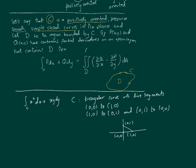This example is integrate x^4 dx plus xy dy over C, where C is the triangular curve with line segments from (0,0) to (1,0), (1,0) to (0,1), and from (0,1) back to (0,0). I've already drawn this for you. This is our C, in this direction, and then back in this direction. There's our triangle, the triangular curve, and that's basically our C. We can see it is positively oriented.